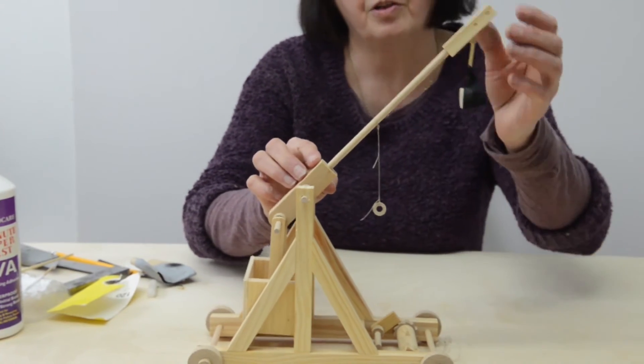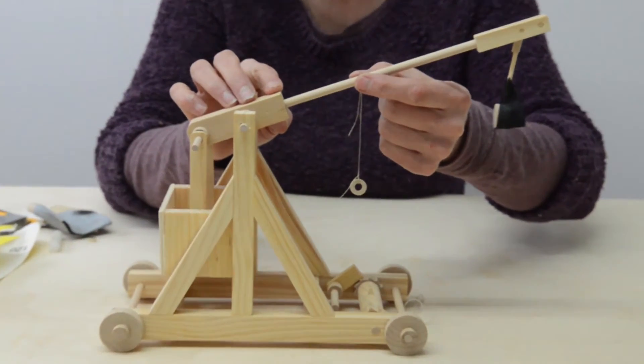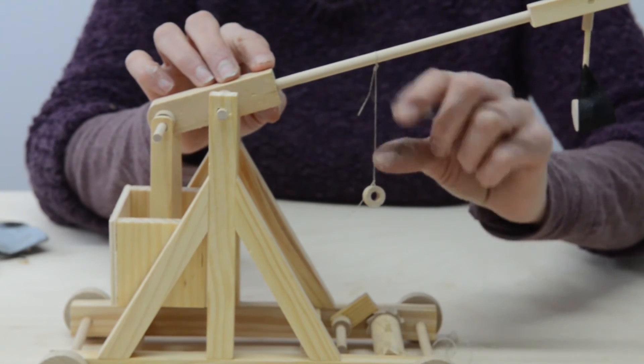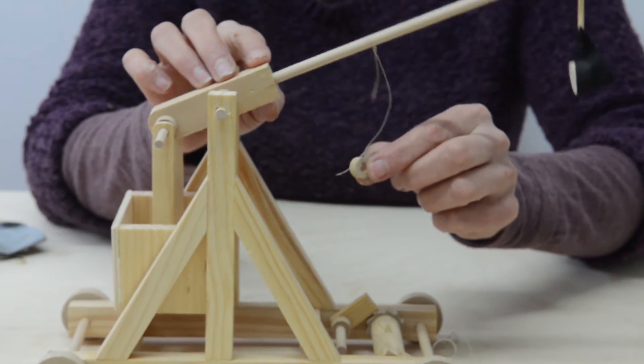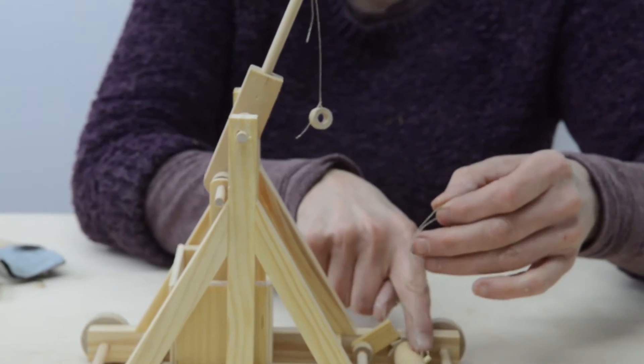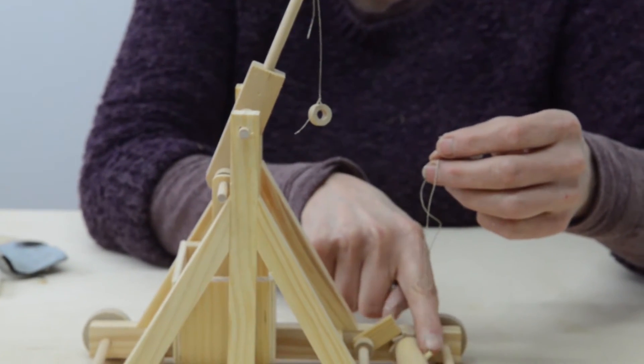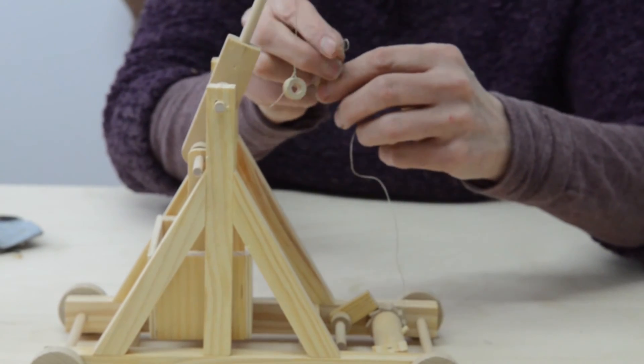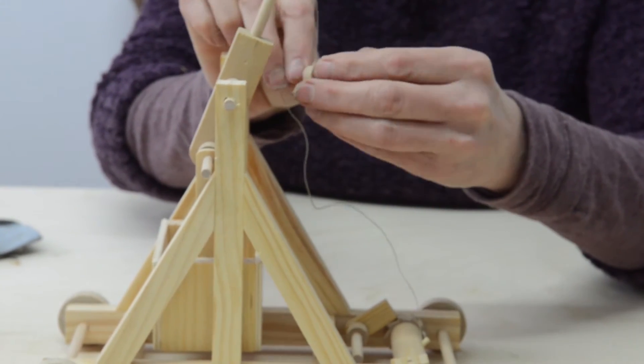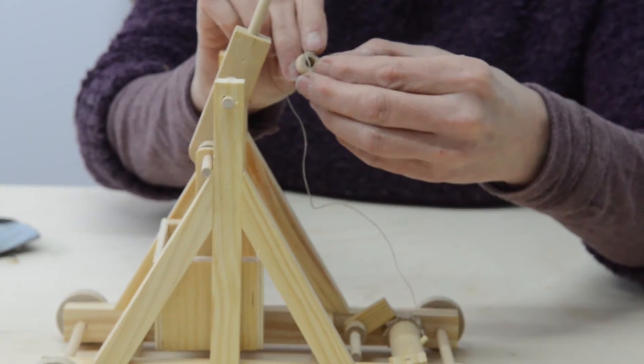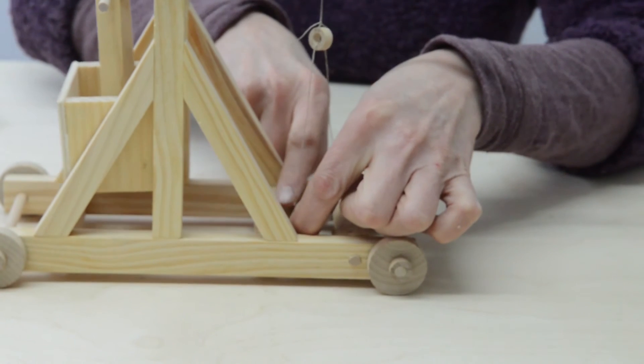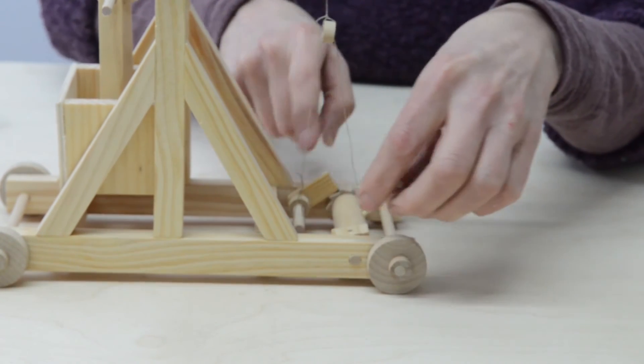So, for stringing the trebuchet up you tie a loop of the thread around there and then about that distance tie the little spacer on. Then you've fixed this already in here. Make a little loop at the end, feed that through that spacer and pull down and loop over there.